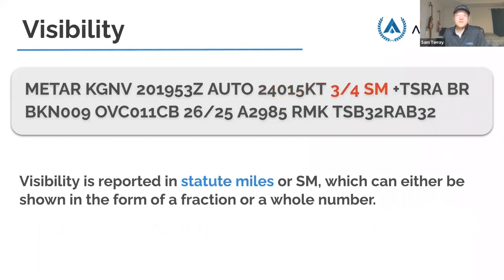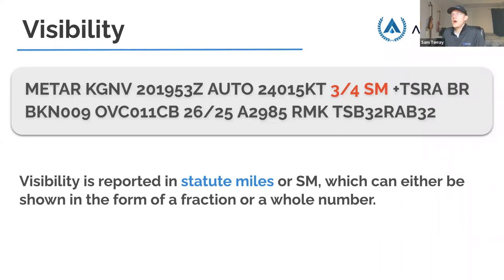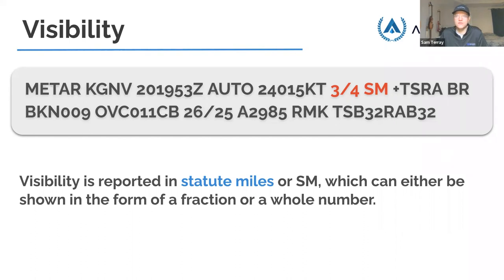Next is visibility, reported in statute miles (SM), shown as a fraction or whole number. In this instance, you have three-quarters of a statute mile. In aviation, the only thing reported in statute miles is visibility — everything else is in nautical miles. Nautical miles are 6,000 feet and statute miles are 5,280 feet, so a nautical mile is a little longer. Just know that visibility is in statute miles. Three-quarters of a statute mile visibility means it's not a great day.